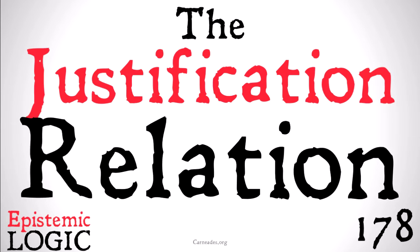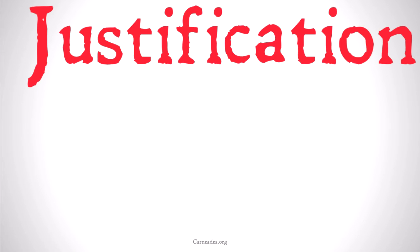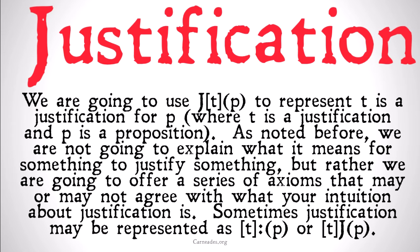A quick note: we're not going to be explaining what justification is in this series. We're going to be explaining how it can be represented logically. With that out of the way, let's get started. We're going to use J, T in square brackets, P — written as JT[P] — to represent 'T is justification for P,' where T is a justification and P is a proposition.